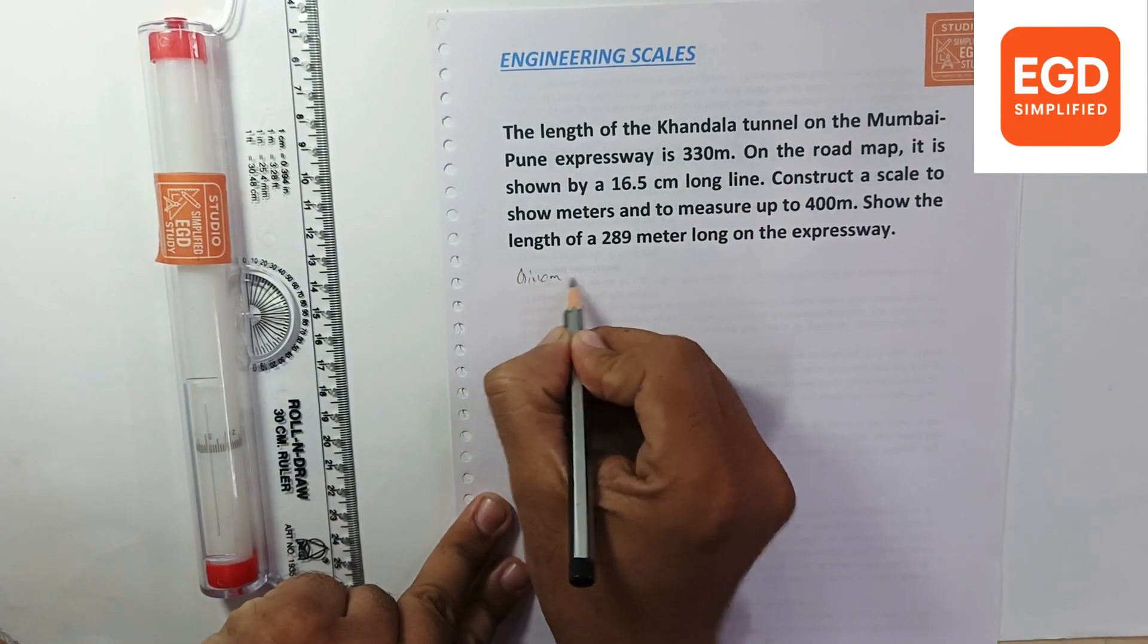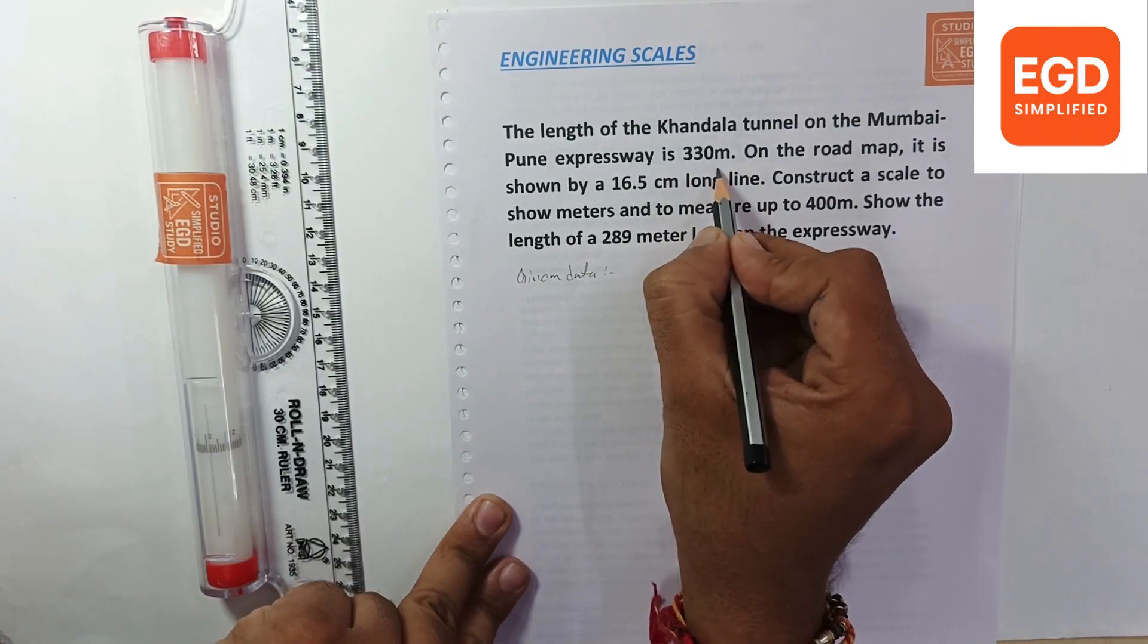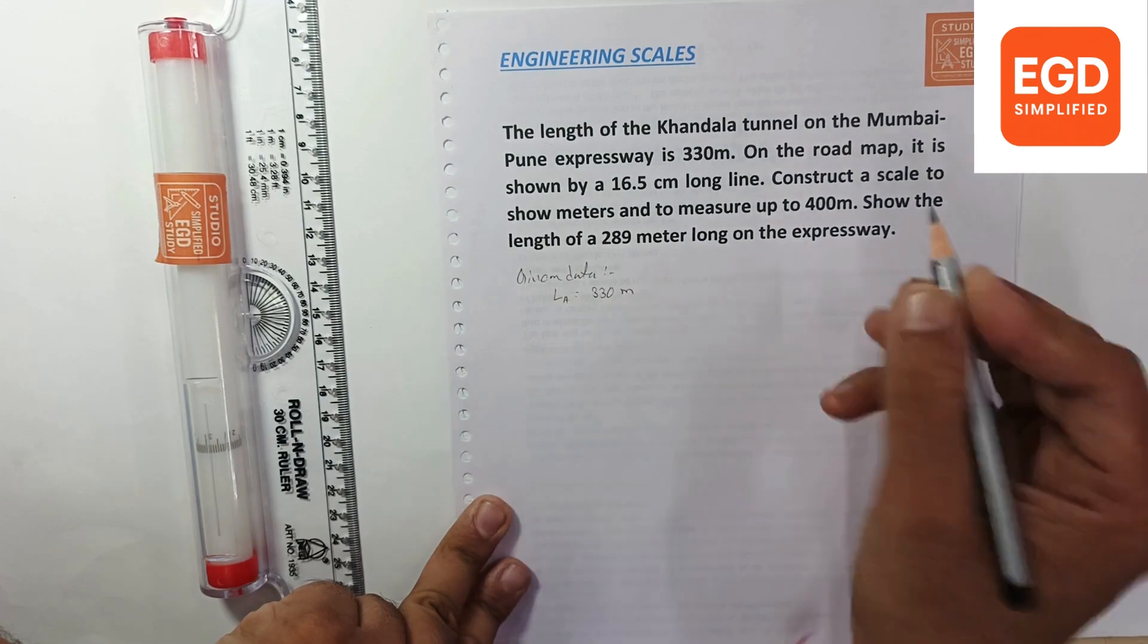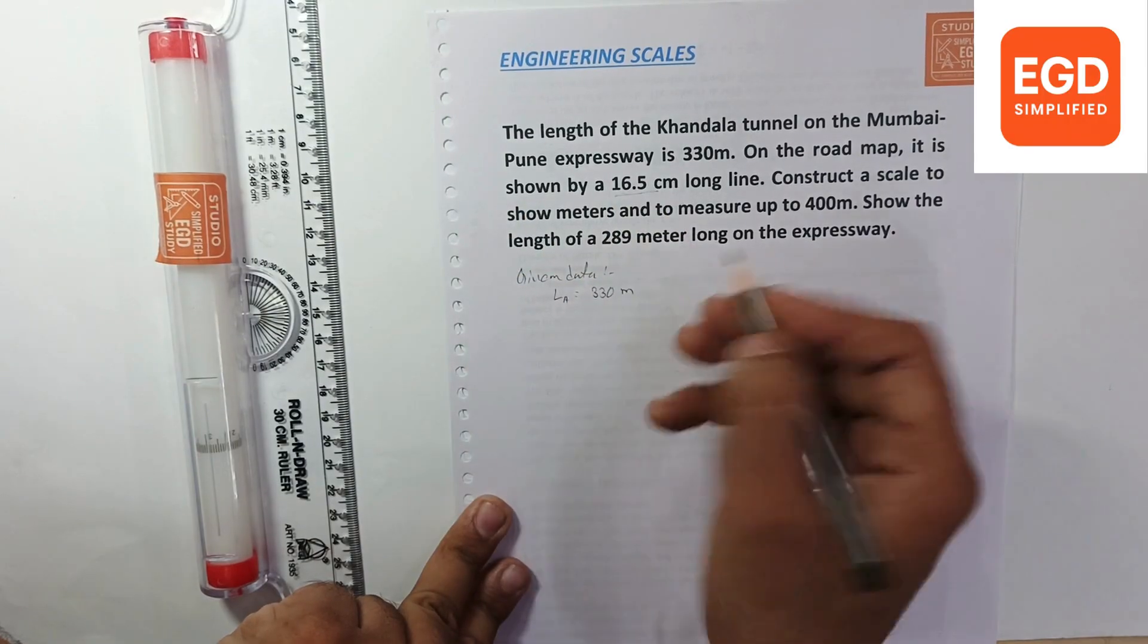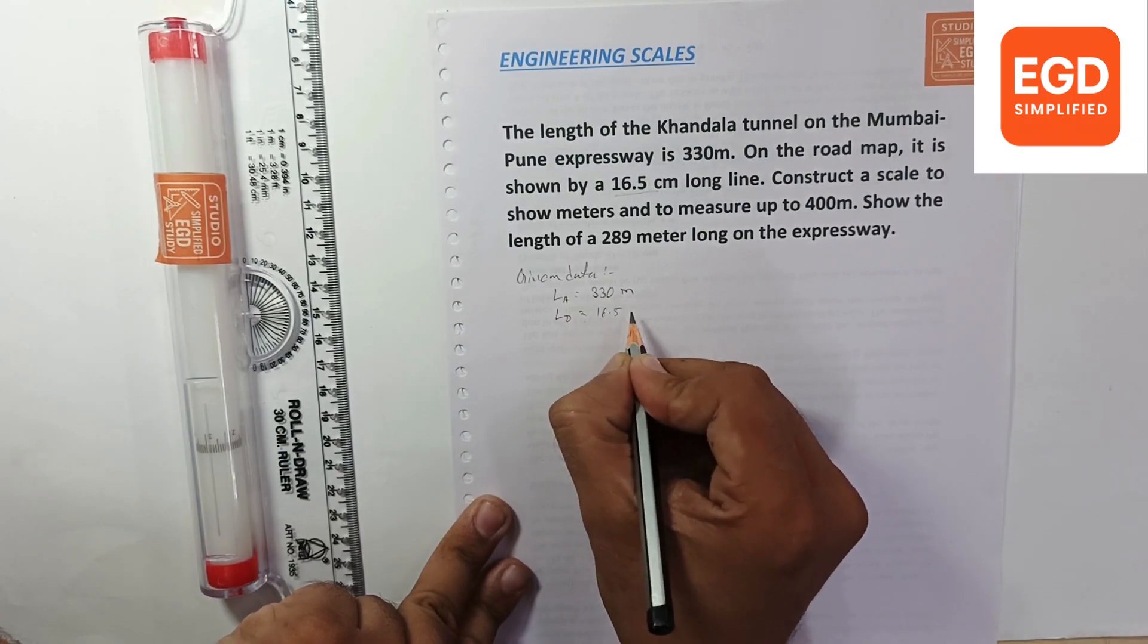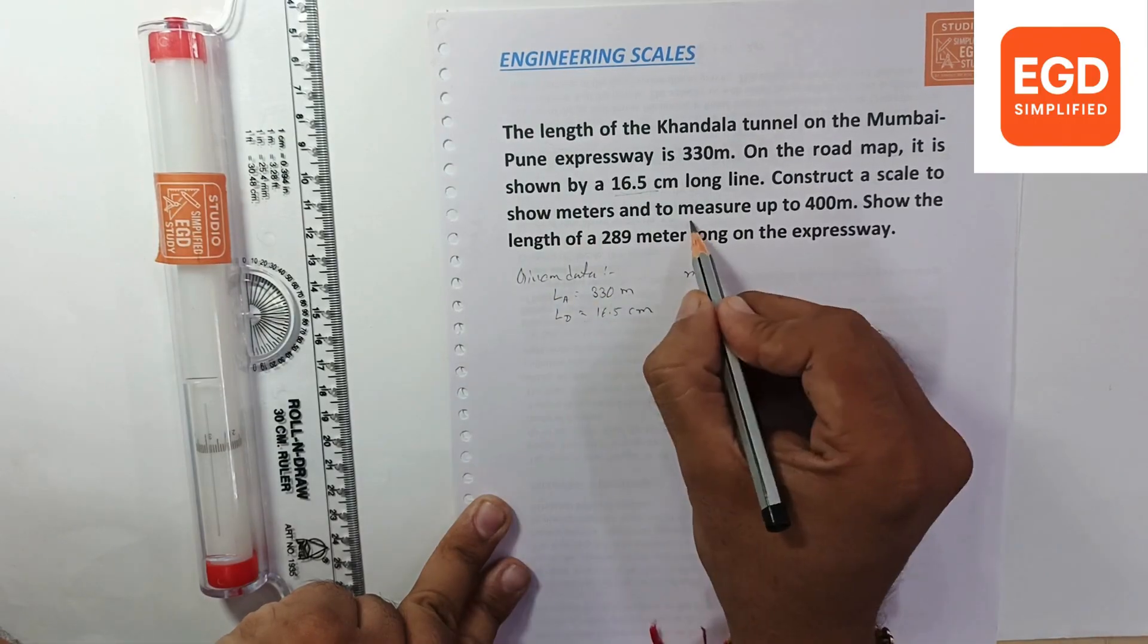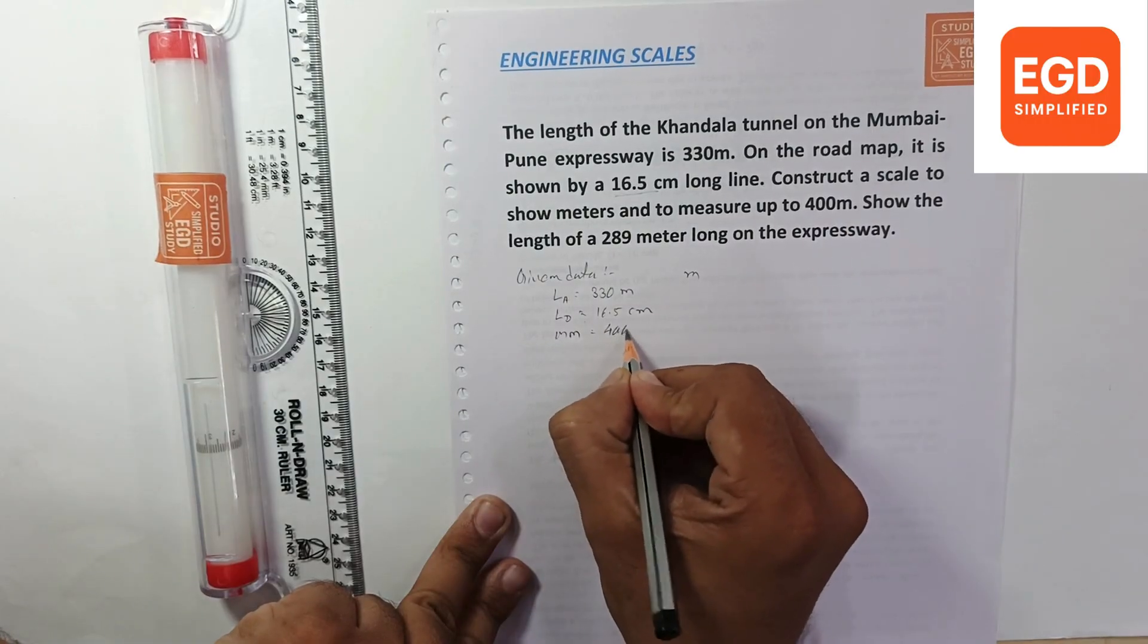We can write the given data. The length of Khandala Tunnel, actual measurement is given A equals 330 meters. On the road map it is shown by 16.5 centimeters, the drawing length. Construct a scale to show meters and to measure up to, maximum measurement is 400 meters.